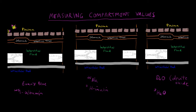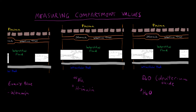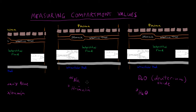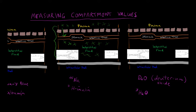If we had a smaller particle that can pass through the plasma but is not permeable to cell walls, we could calculate the extracellular fluid. If we inject it into the plasma and it leaks into the interstitial fluid, we have it in both compartments. Sodium and inulin are small substances that are relatively impermeable to the cell wall, so we can use them to calculate extracellular fluid.